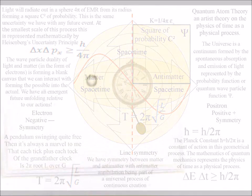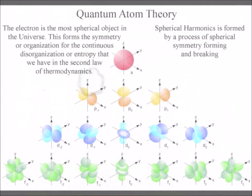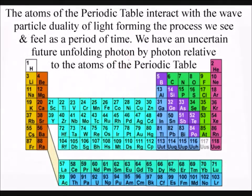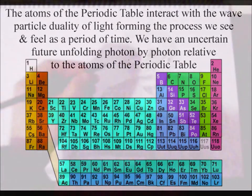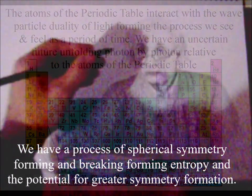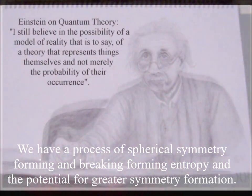We have an uncertain future unfolding photon by photon with each new photon oscillation or vibration relative to the atoms of the periodic table, with the wave-particle duality of light and matter in the form of electrons forming a blank canvas that we can interact with, forming the possible into the actual.